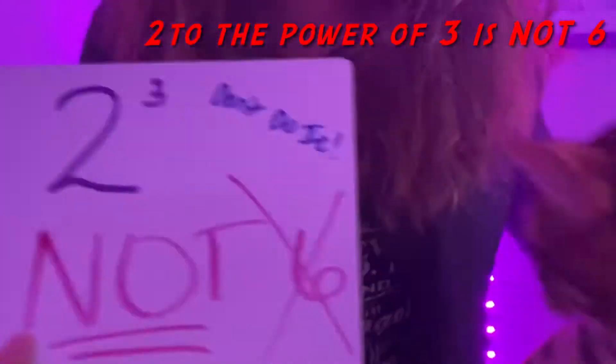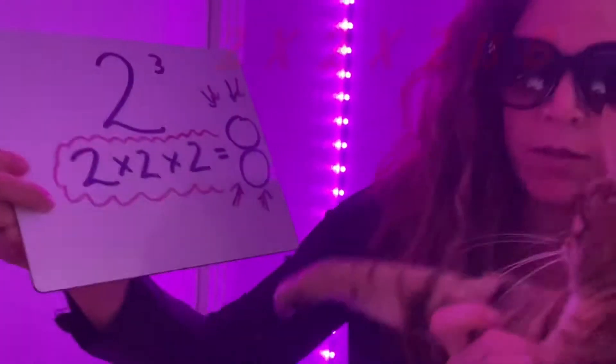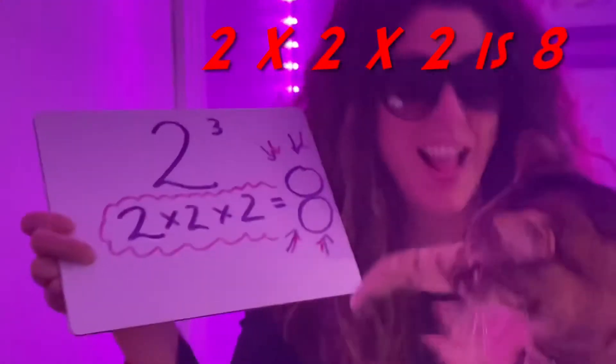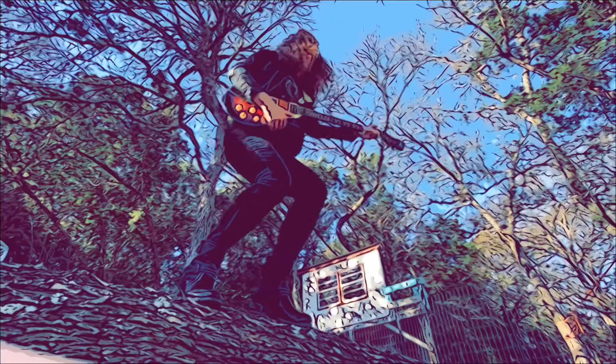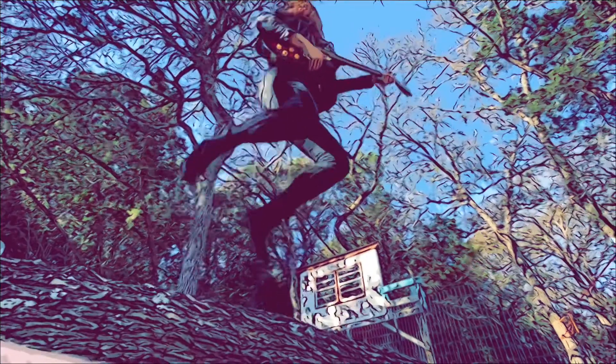2 to the power of 3 — it's not 6! 2 to the power of 3 means 2 times 2 times 2. That's 8! Don't make that mistake!